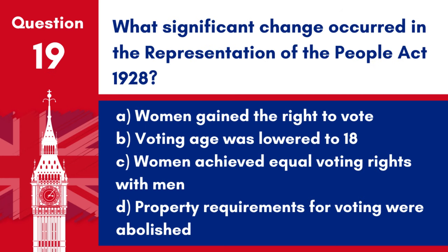Question 19. What significant change occurred in the Representation of the People Act 1928? a. Women gained the right to vote. b. Voting age was lowered to 18. c. Women achieved equal voting rights with men. d. Property requirements for voting were abolished. Answer: c. Women achieved equal voting rights with men. The Representation of the People Act 1928 granted women equal voting rights with men.